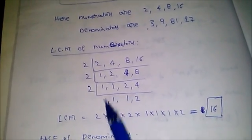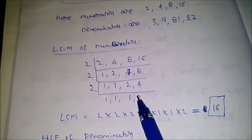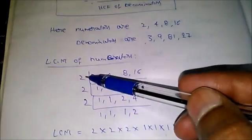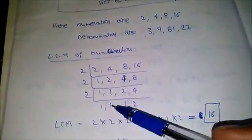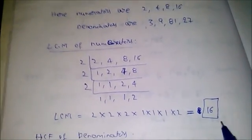Continue dividing: 1 as is, 1 as is, 2 divided by 2 equals 1. Multiply all the 2s together: LCM equals 2 × 2 × 2 × 2 = 16. Now we got the LCM of the numerators.